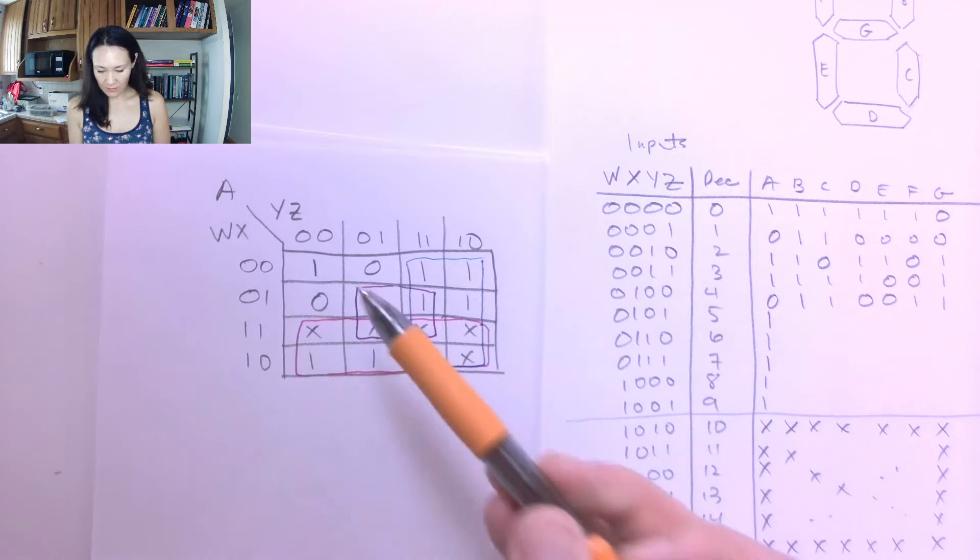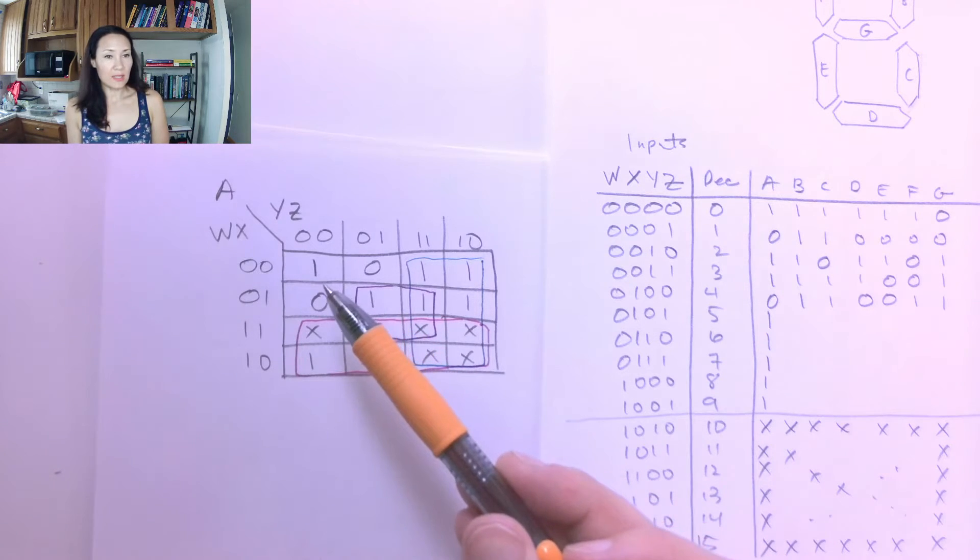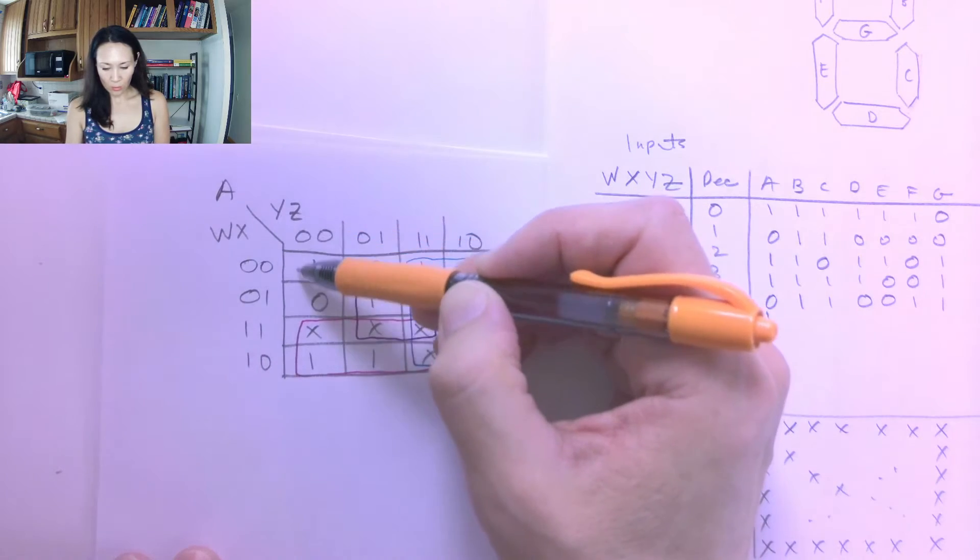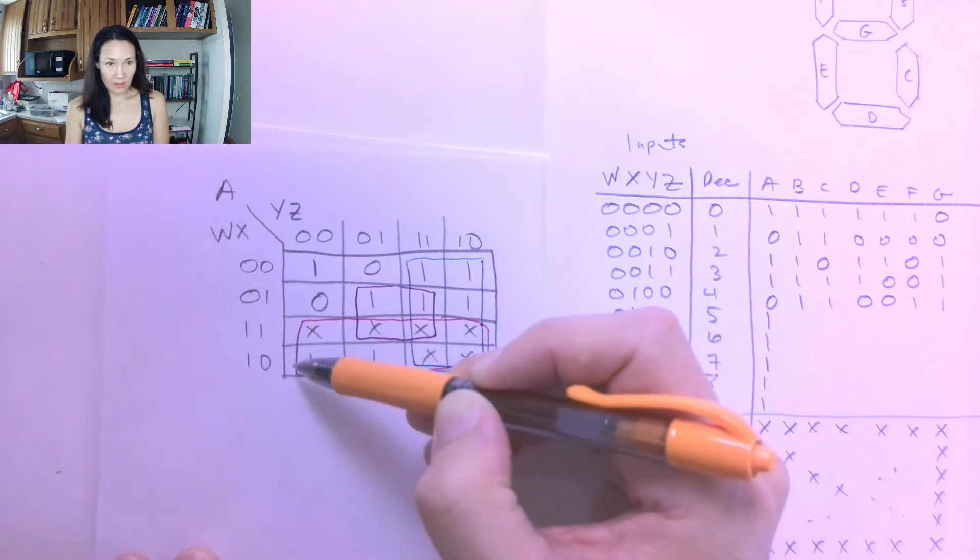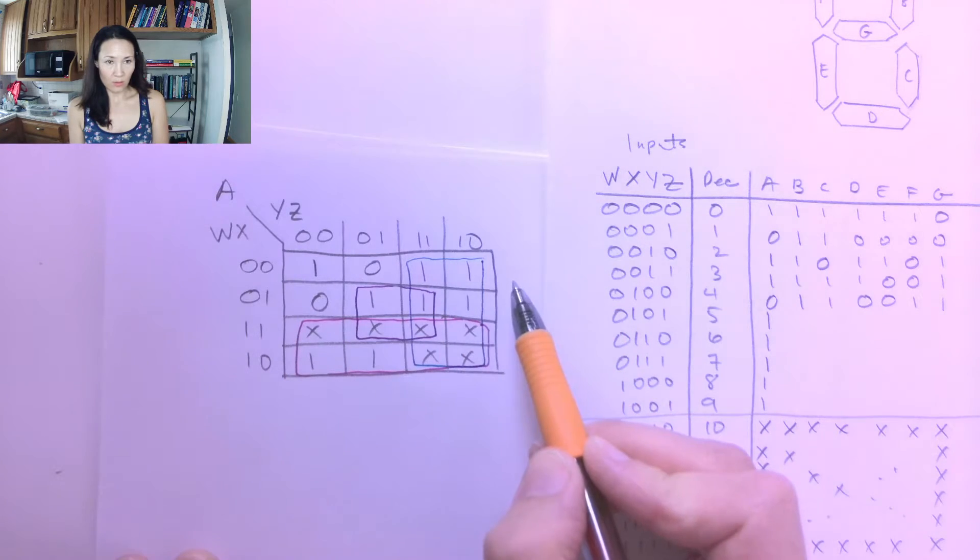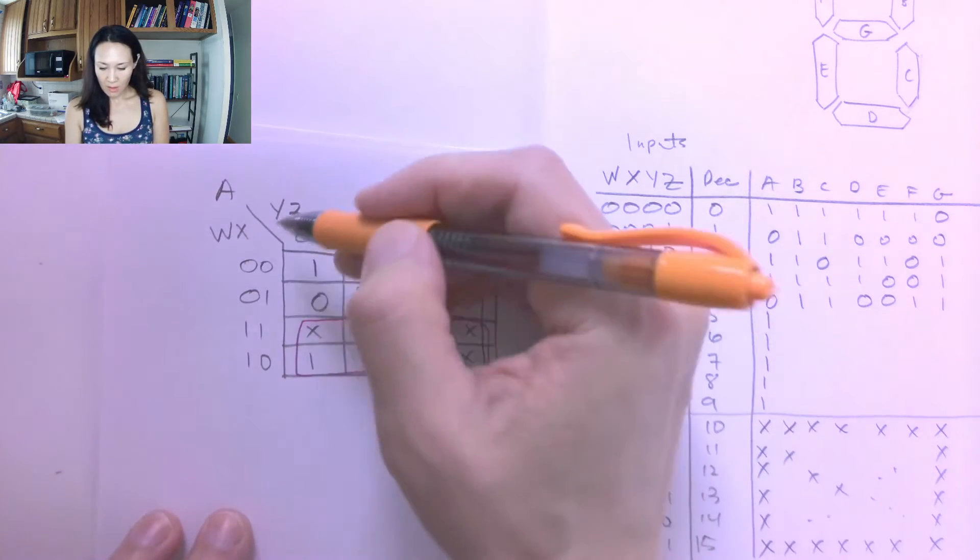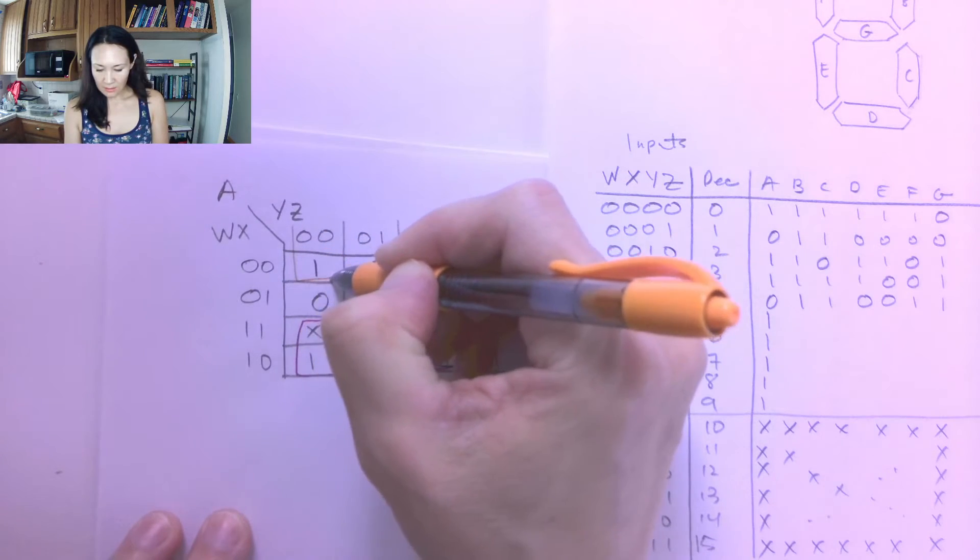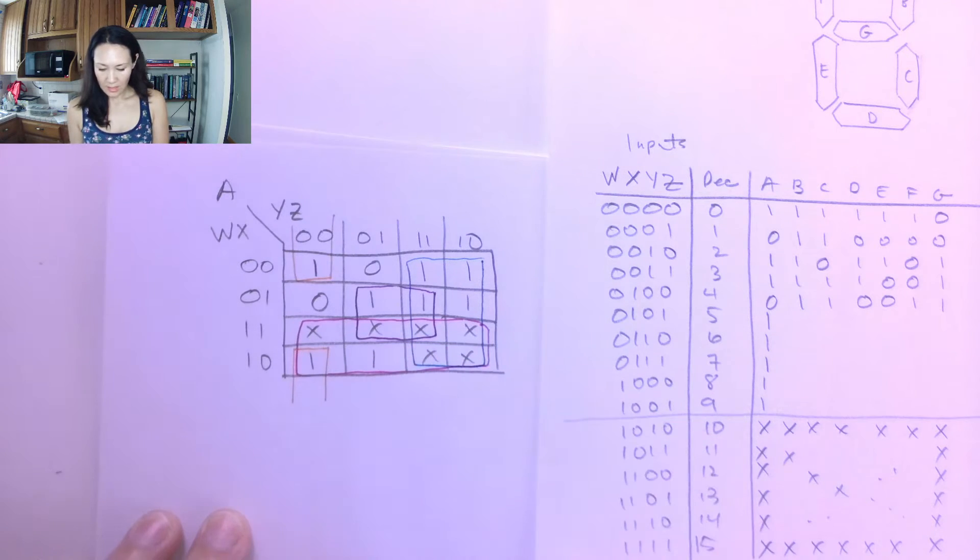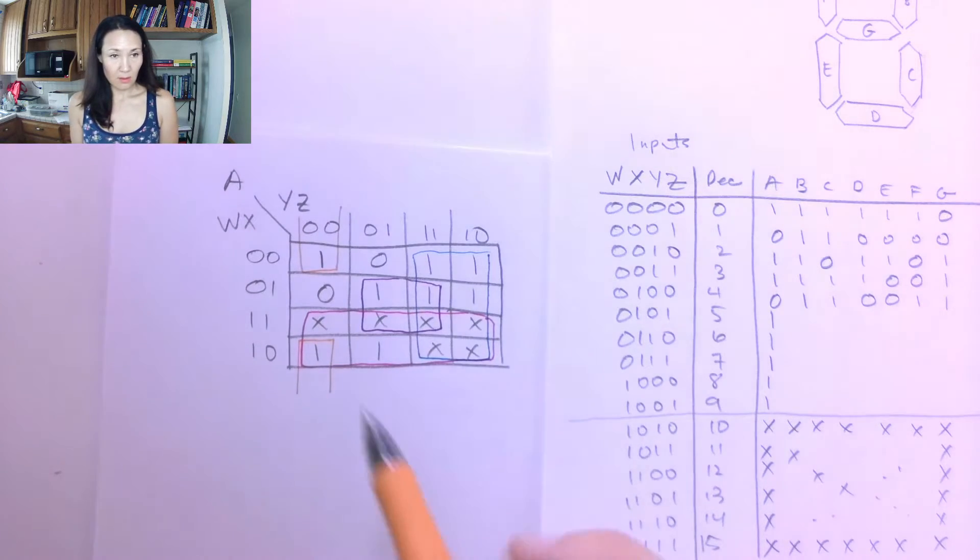So now I still have this 1 here. It looks like it's in no man's land, but really it's not because we are allowed to do wrap around grouping. So we've got a couple options here. I can group this 1 with this 1 down here, or I can group this 1 with this 1 over here. So it really doesn't matter. You're going to get a similar simplification. It's just going to be with some different literals, and they're both going to be logically exact. So those are going to be my groupings.